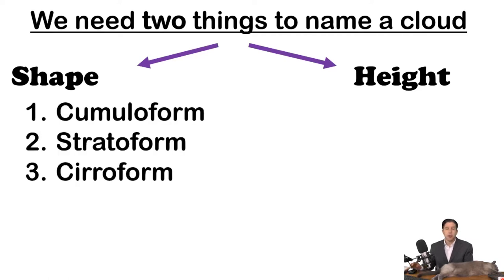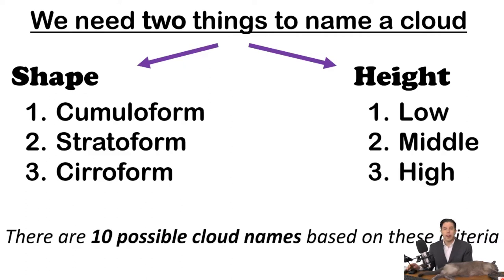For shapes, there are three general shapes that all clouds should fit into: cumuliform, stratiform, and ciriform. And then there are three heights that all clouds should fall into: either low, middle, or high. Given those variables, there are ten basic cloud types that we can come up with from this system.